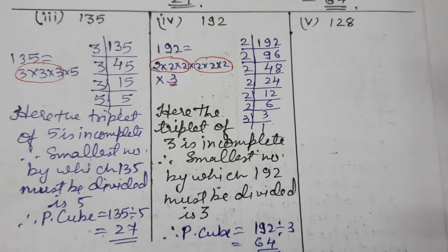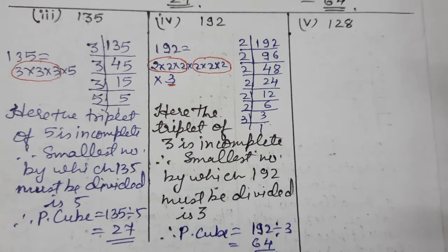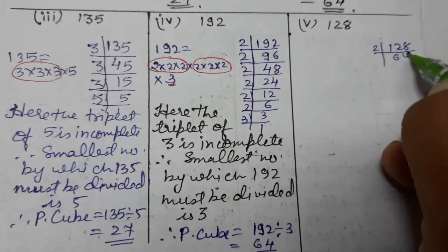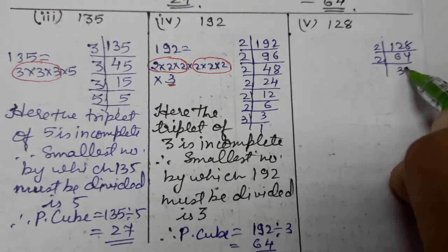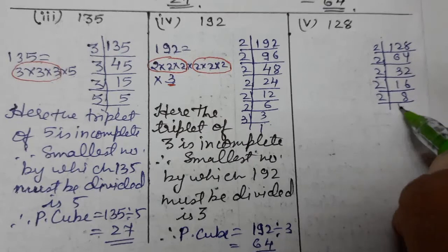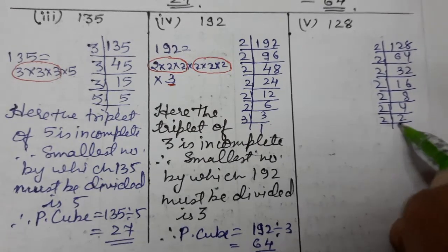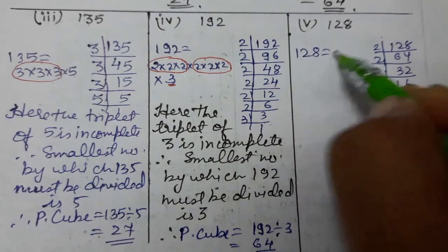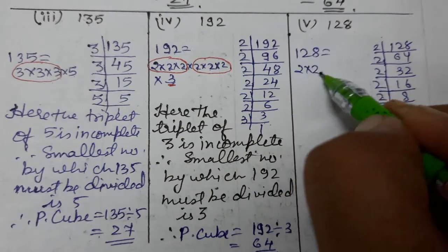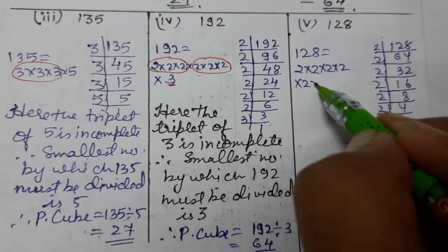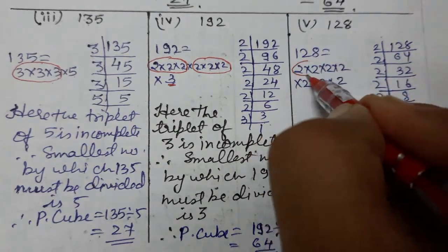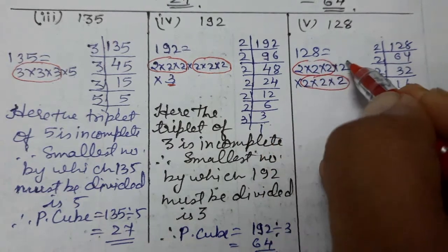Now we'll do the last part, the fifth one. Again take prime factors as usual: 2 into 64, 2 into 32, 2 into 16, 2 into 8, 2 into 4, 2 into 2, and 2 into 1. So 128 can be written as 2 taken 7 times: 1, 2, 3, 4, 5, 6, and 7. Making triplets: one triplet is complete, another triplet is complete, and one 2 is left alone.